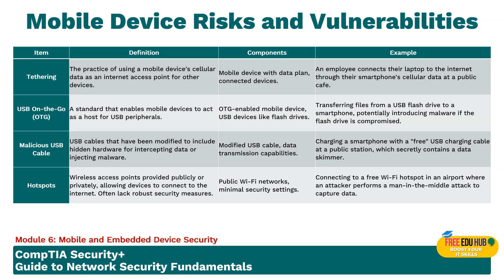USB On-The-Go (OTG) is a standard that enables mobile devices to act as a host for USB peripherals. OTG-enabled devices can transfer files from USB flash drives onto a smartphone, but potentially introduce malware if the flash drive is compromised. Additionally, malicious USB cables are modified cables with hidden hardware that intercept data or inject malware. People avoid using cables and charging ports at airports because those cables may be malicious and used to copy data from your mobile device.